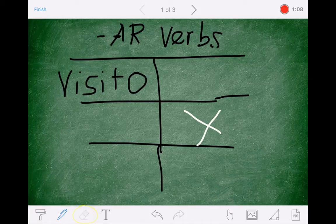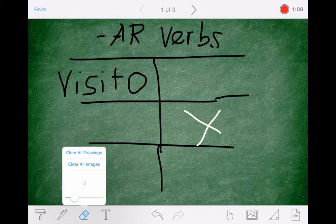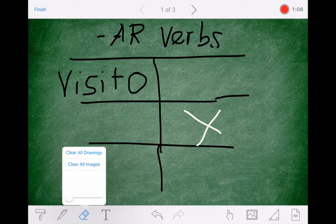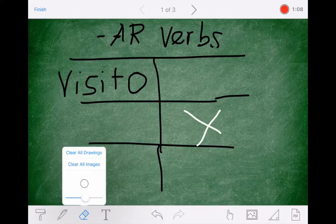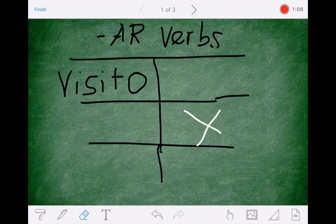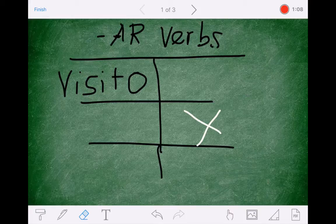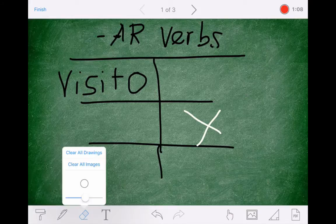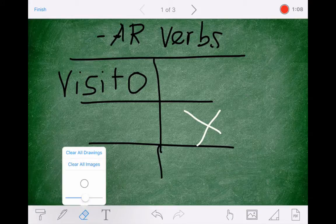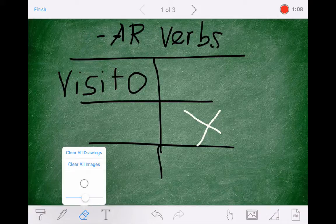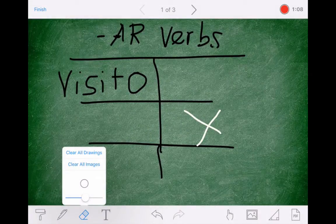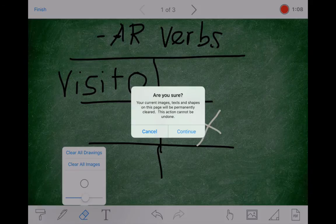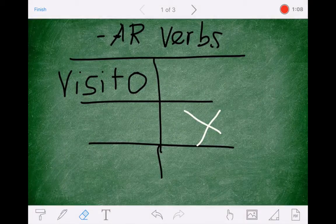We also have the eraser. When you tap the eraser, it gives you the ability to decide how big the eraser should be. Do you want to just be able to erase a little bit at a time, or do you want to be able to erase a lot at a time? So it's up to you to decide how big that eraser is. You can also clear all drawings. If you tap that, it says, are you sure? And if you say yes, continue, it will get rid of all the drawings. You can also clear your images.